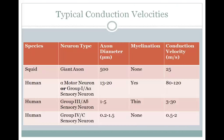In invertebrates, large axon diameters are the predominant mechanism of increasing action potential conduction velocity. For instance, the squid giant axon has an axon diameter around 500 microns or half a millimeter, no myelination, and a conduction velocity of around 25 meters per second, which is quite fast.